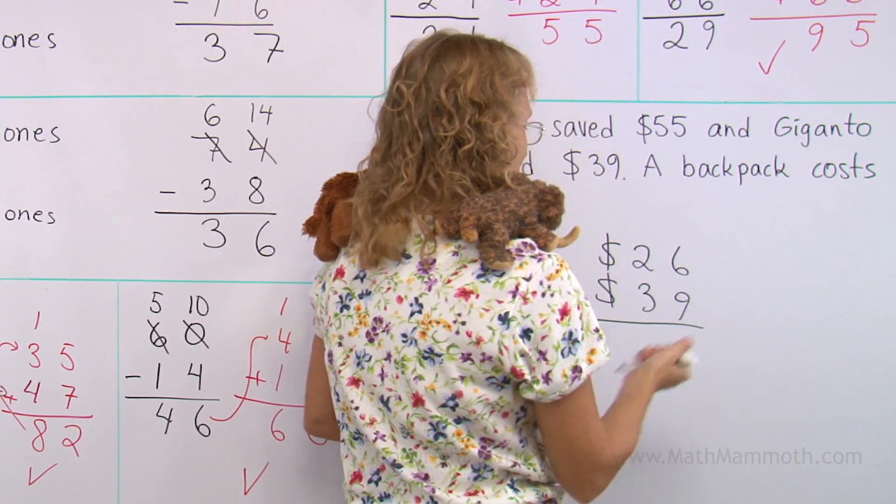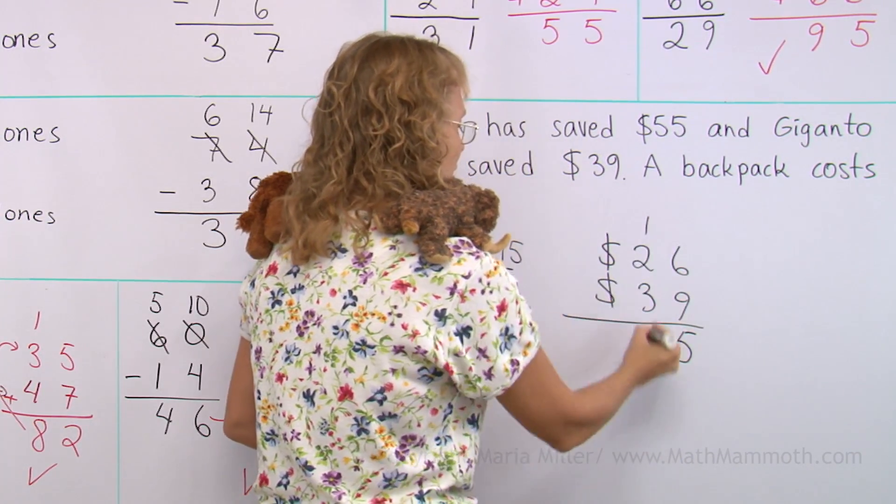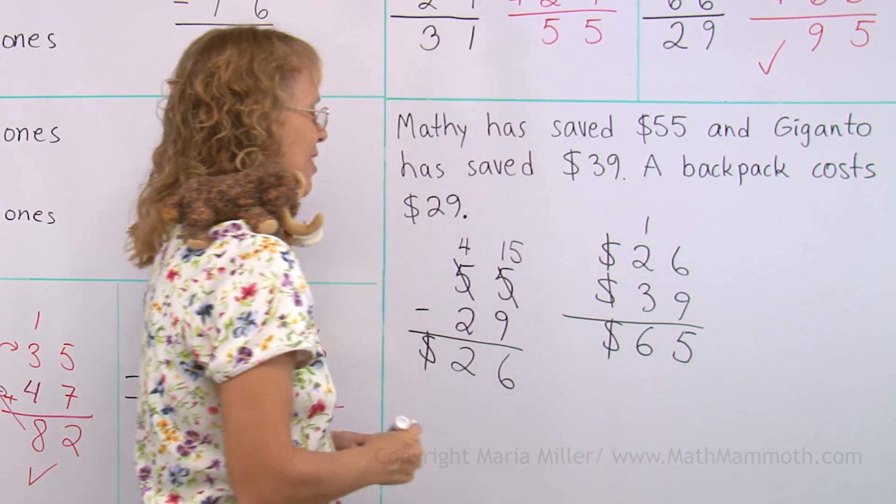6 plus 9, 15, and regroup. And then over here, $65 still left.